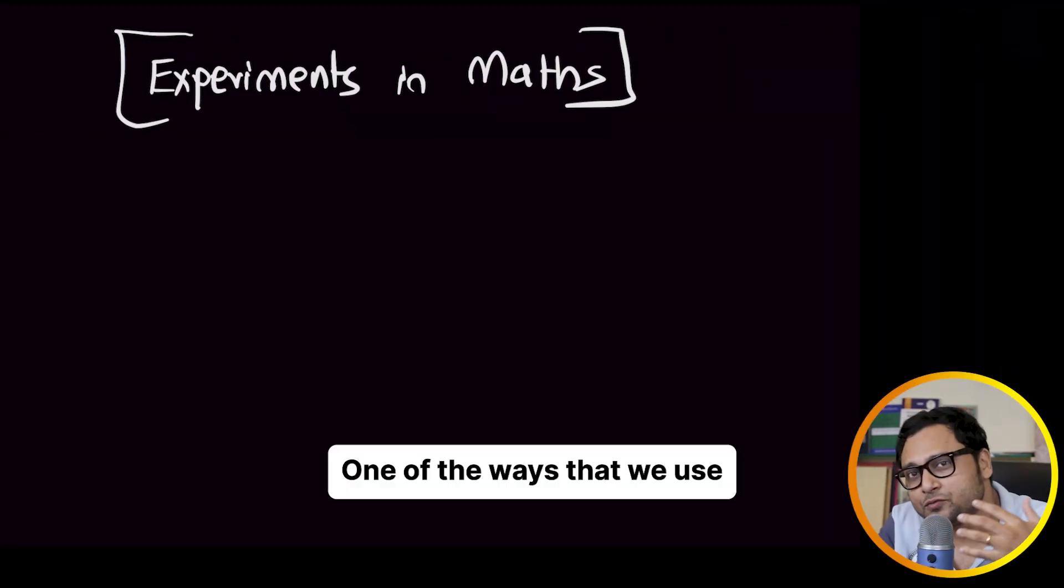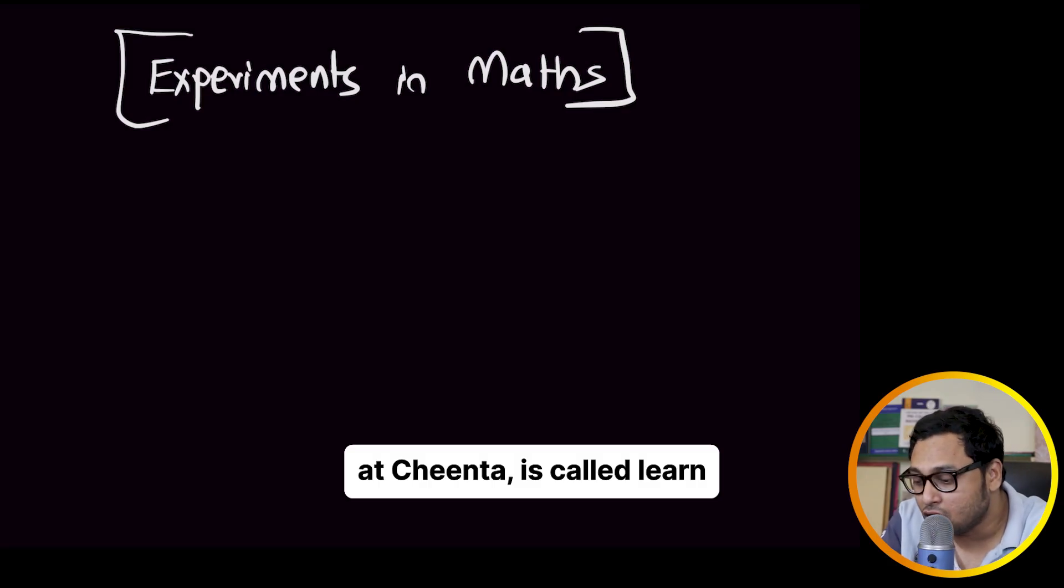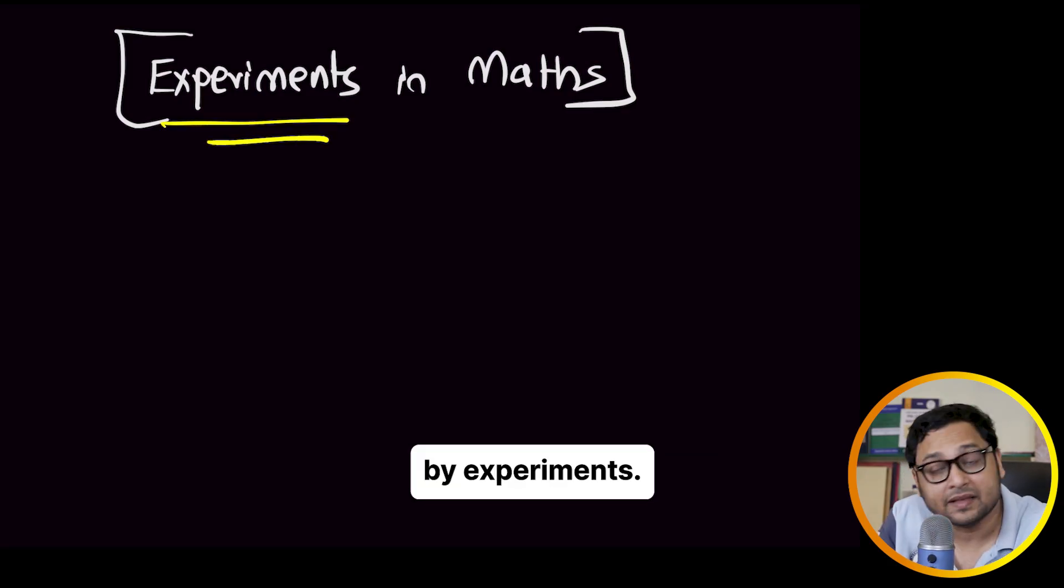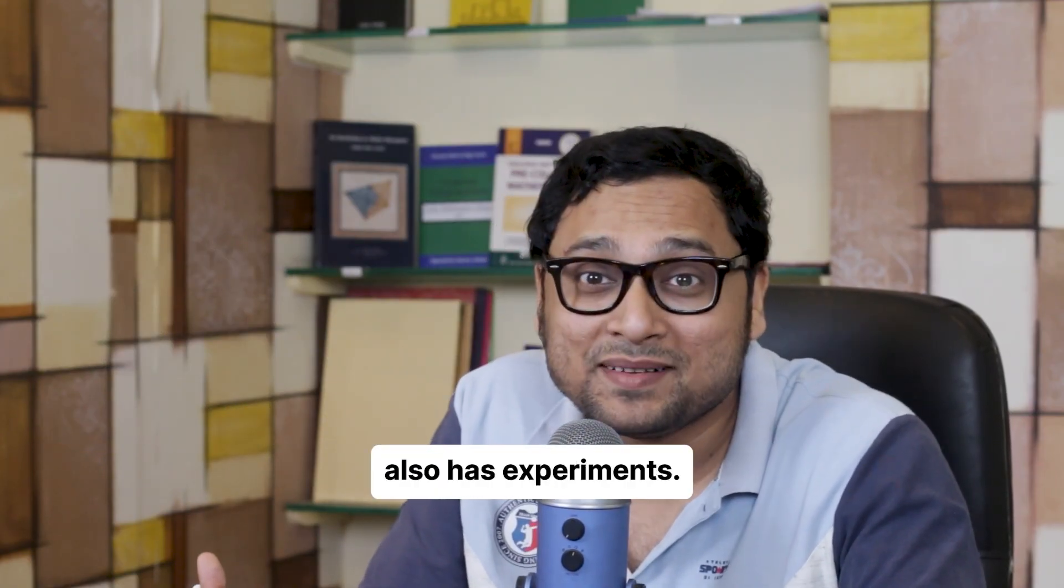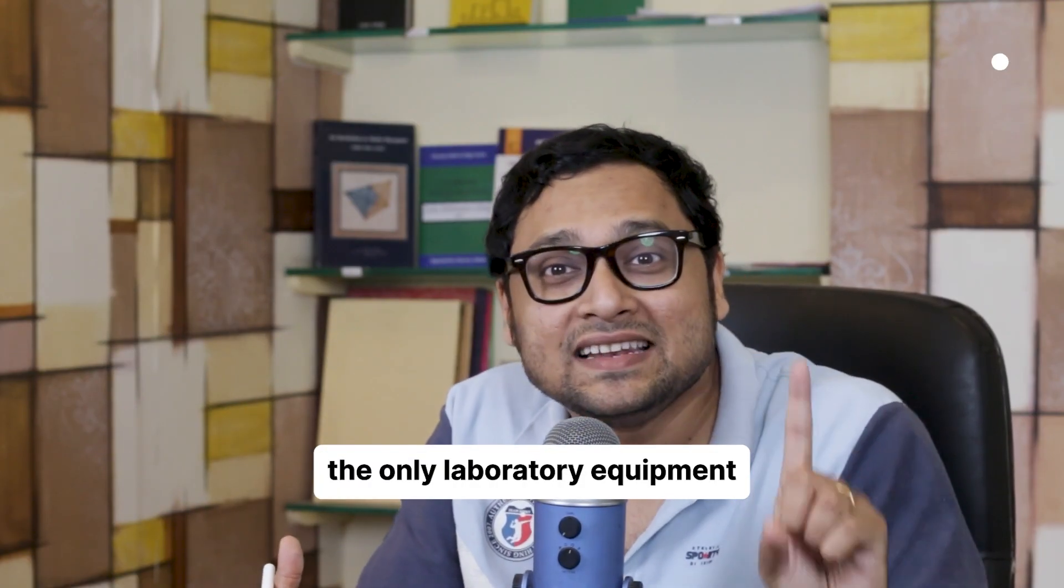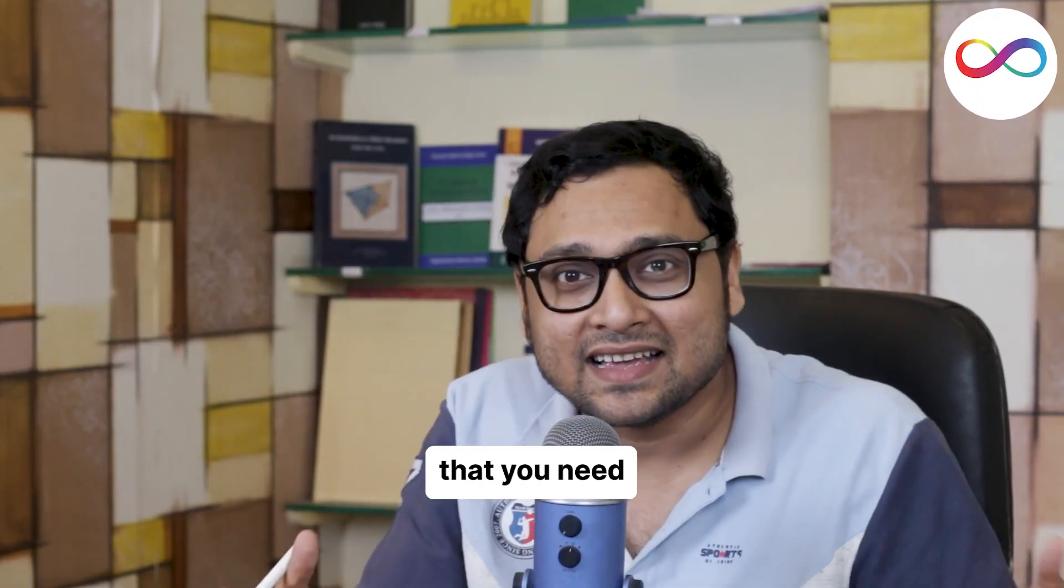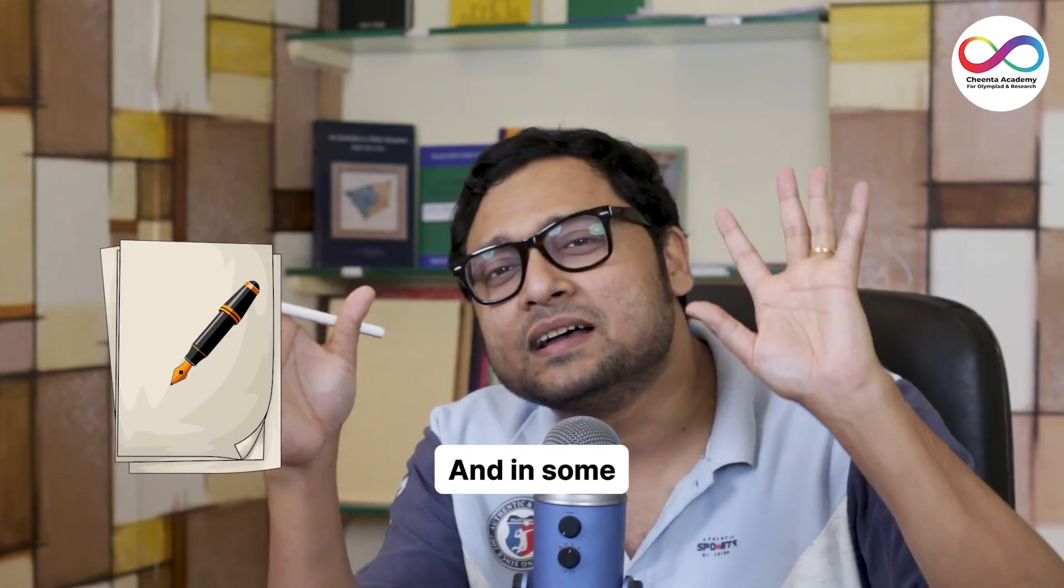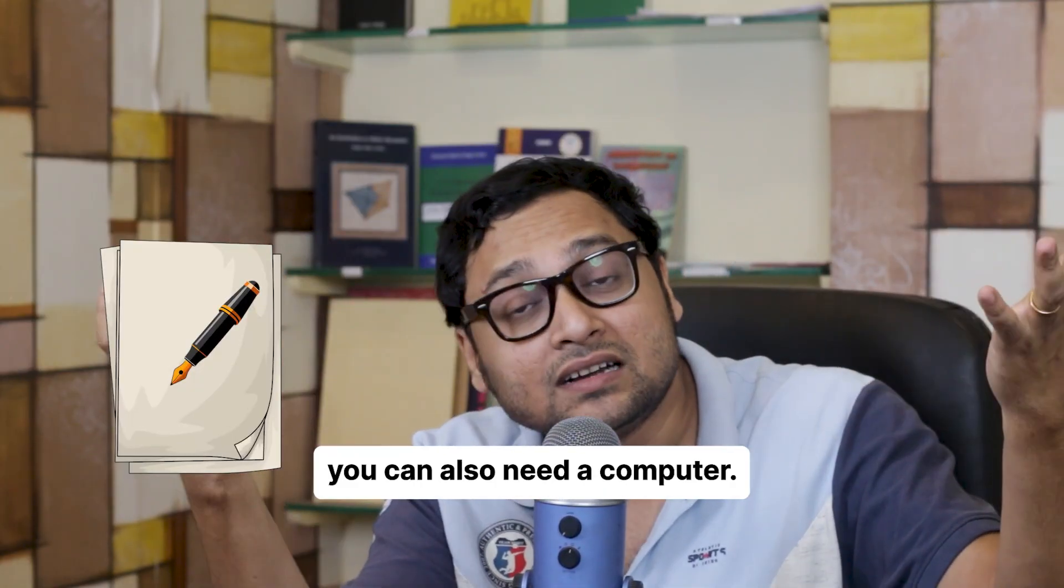One of the ways that we use at Chanta is called learn by experiments. Just like physics, chemistry, biology or other sciences, mathematics also has experiments. The good news is the only laboratory equipment that you need is your pen and paper. And in some extreme situations, you can also need a computer.